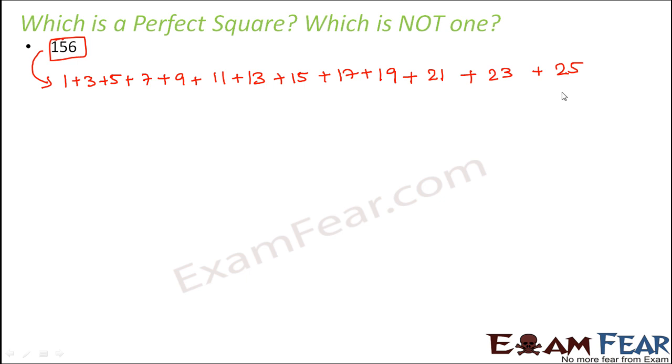But we need 156. So if we do the sum up to here, then it is 144. If we do the sum up to here, then it is 169. But we want 156. So 156 will lie somewhere between 144 and 169, right? So what does this mean? This means that 156 is not a perfect square because had 156 been a perfect square, we would have got exact sum as 156, right? But in this case, we are not able to write 156 as the sum of first n odd numbers.